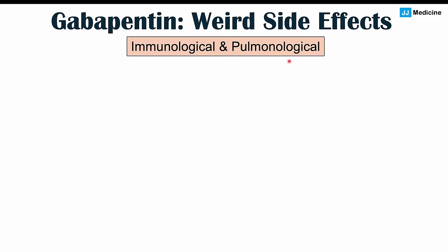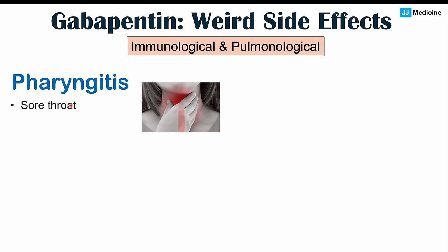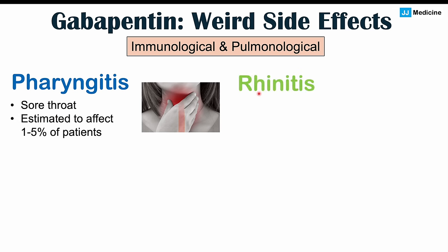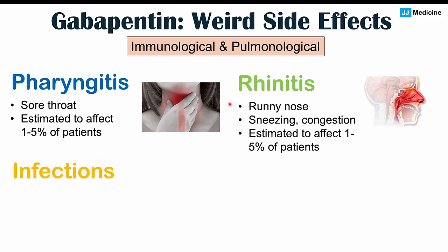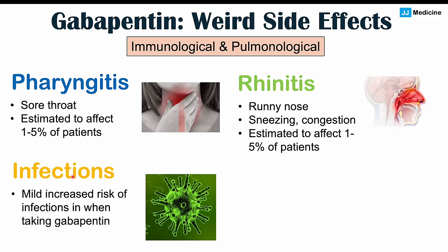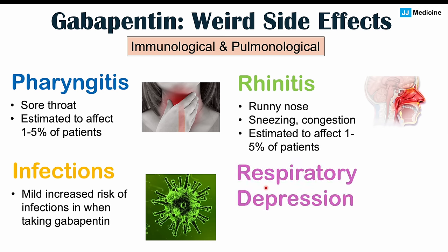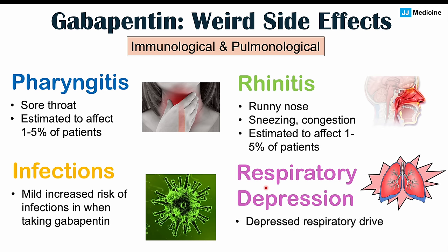There are also immunological and pulmonological side effects. These include pharyngitis — a sore throat — estimated to affect 1% to 5% of patients, and rhinitis including runny nose, sneezing, and congestion, also affecting 1% to 5% of patients. A mild increased risk of infections may occur in some patients. Respiratory depression is a very serious side effect where gabapentin leads to a depressed respiratory drive, especially when combined with other medications that suppress neuronal functioning.